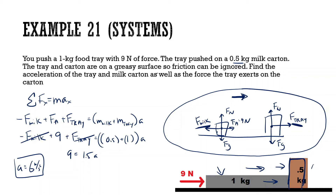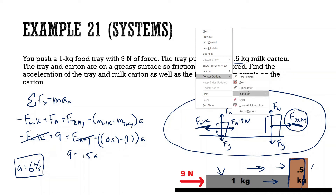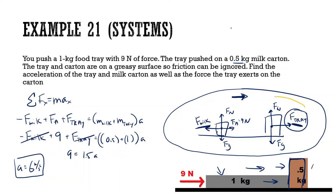Now we want to find the force the tray exerts on the carton. Whenever we're trying to find the force between two objects, we can't look at the whole system because those forces cancel out. So we isolate the milk carton's free body diagram.